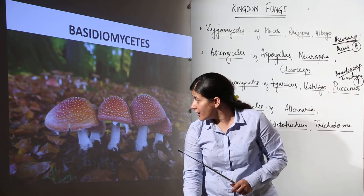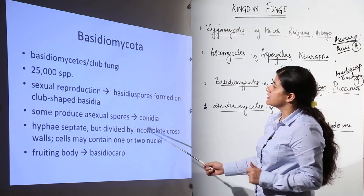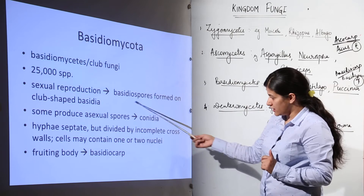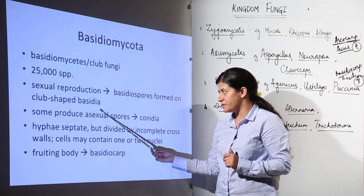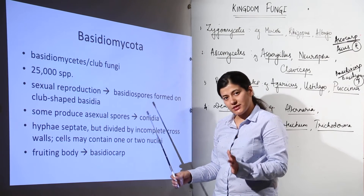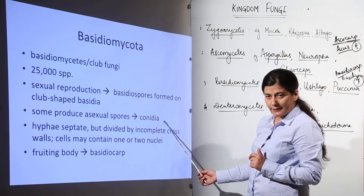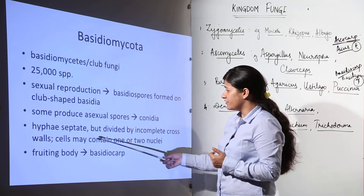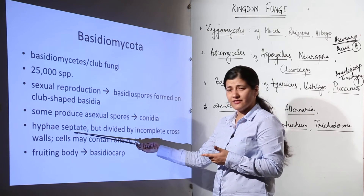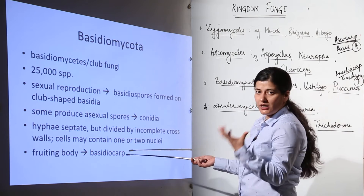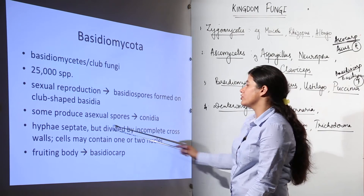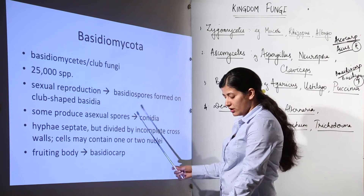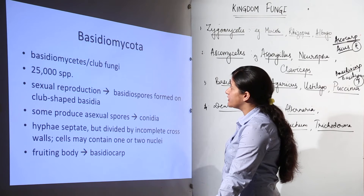In the basidium there are four spores formed, called basidiospores. Basidiomycetes are also known as club fungi and have almost 25,000 discovered species. Sexual reproduction is by means of basidiospores formed on club-shaped basidia present in basidiocarps. Some produce asexual spores known as conidia. The hyphae are septate — divided by incomplete cross walls — and the cell may contain one or two nuclei. The fruiting body is the basidiocarp.